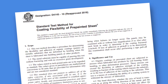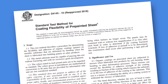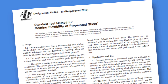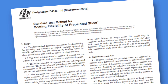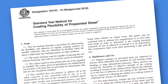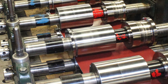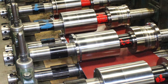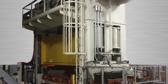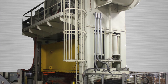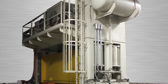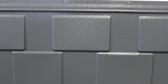ASTM D4145 covers a procedure for a simple and quick determination of the flexibility of an organic coating. The test offers insight into the coating's ability to withstand downstream fabrication techniques, such as roll forming and bending brake forming. Each of these fabrication methods, as well as the T-Bend test, are examples of slow deformation fabrication. Rapid deformation testing, which predicts performance in fabrication techniques such as stamping and punching, is not covered in this video.